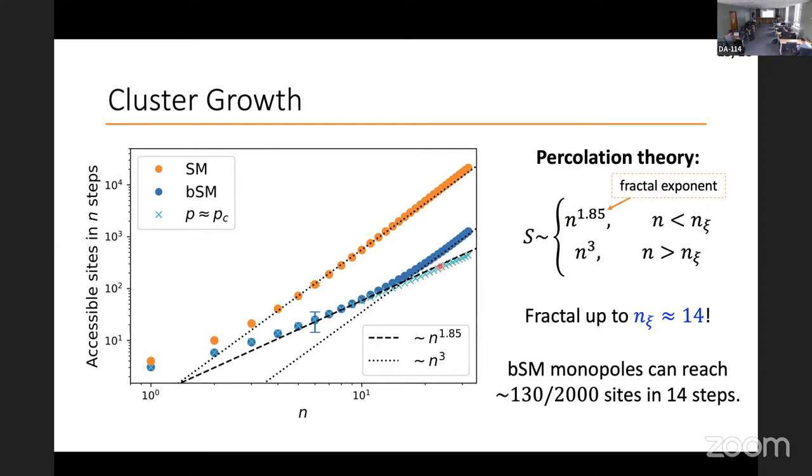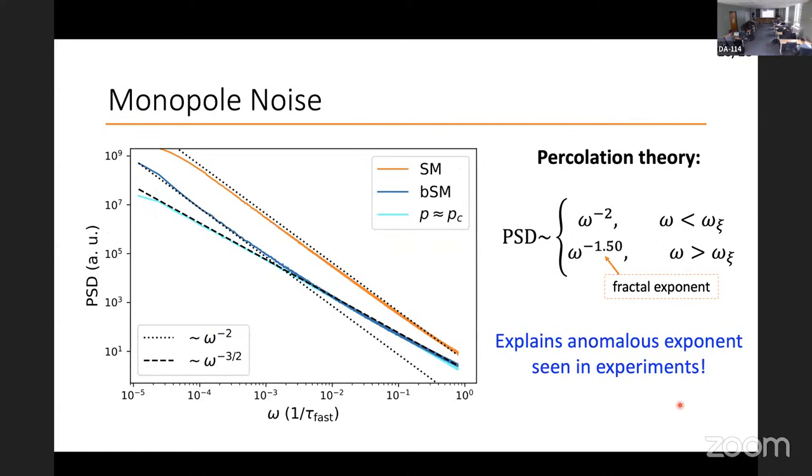To hammer this home, we can look at the actual percolation system. We can do the percolation model and the exact same calculation at the critical filling fraction. And we find these cyan crosses here that match the spin ice model incredibly well all the way up to this crossover length. This is quite, in my opinion, quite convincing evidence that what we have here is actually a fractal that you get from percolation. And just again, I can point out that in BSM monopoles they reach less than an order of magnitude as many sites as the SM ones in 14 steps. And this is why the relaxation is so slow. The relaxation can only happen if monopoles are allowed to move through the system and flip spins and change the state.